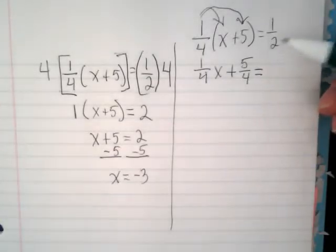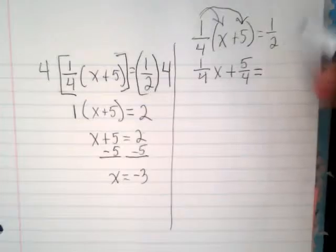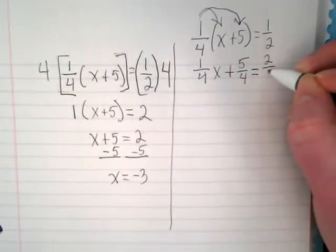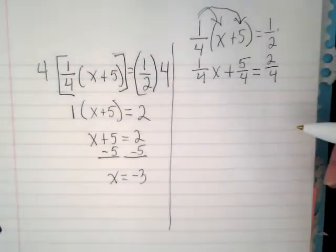I don't want to leave that as 1 half though, because everything else over here is fourths. So I'm going to convert this to 2 fourths by multiplying these by 2 and over 2. I want to have the same denominator.